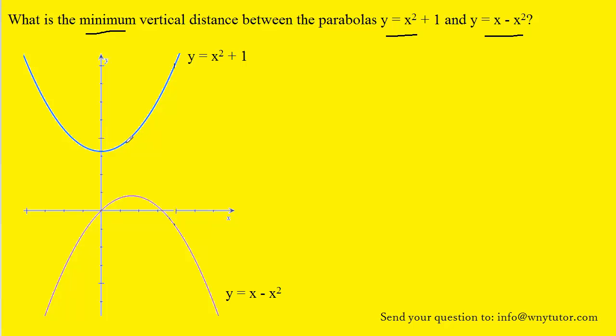What we can do to understand what it is we're actually trying to minimize is to maybe select an arbitrary point on this parabola. Let's put it right there. Now we would know that the vertical distance from that point down to the x-axis would be equal to a y-coordinate.